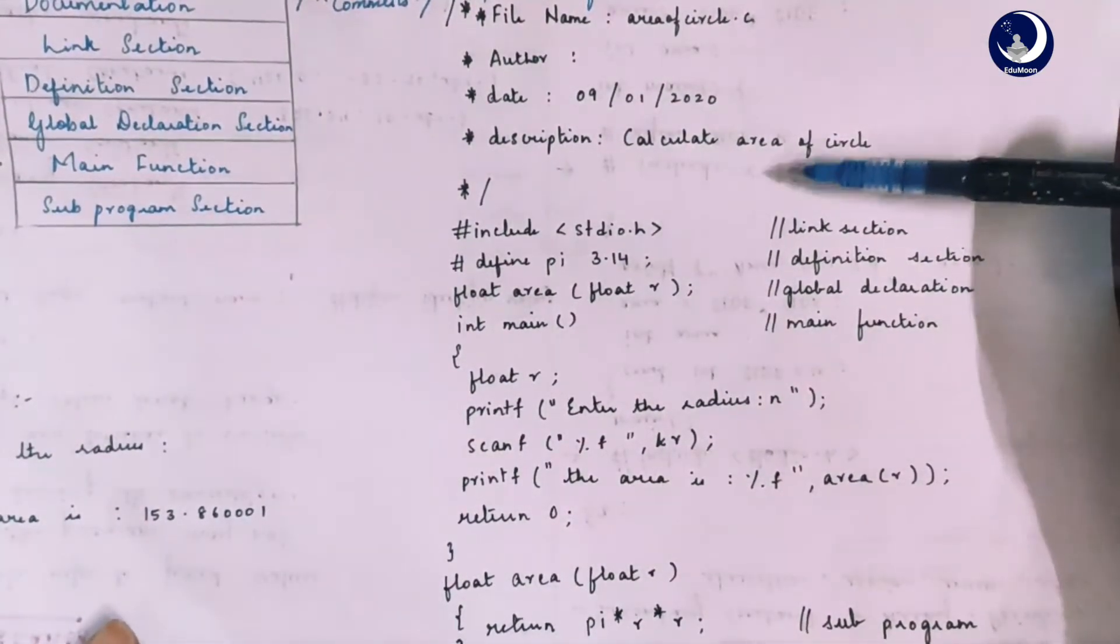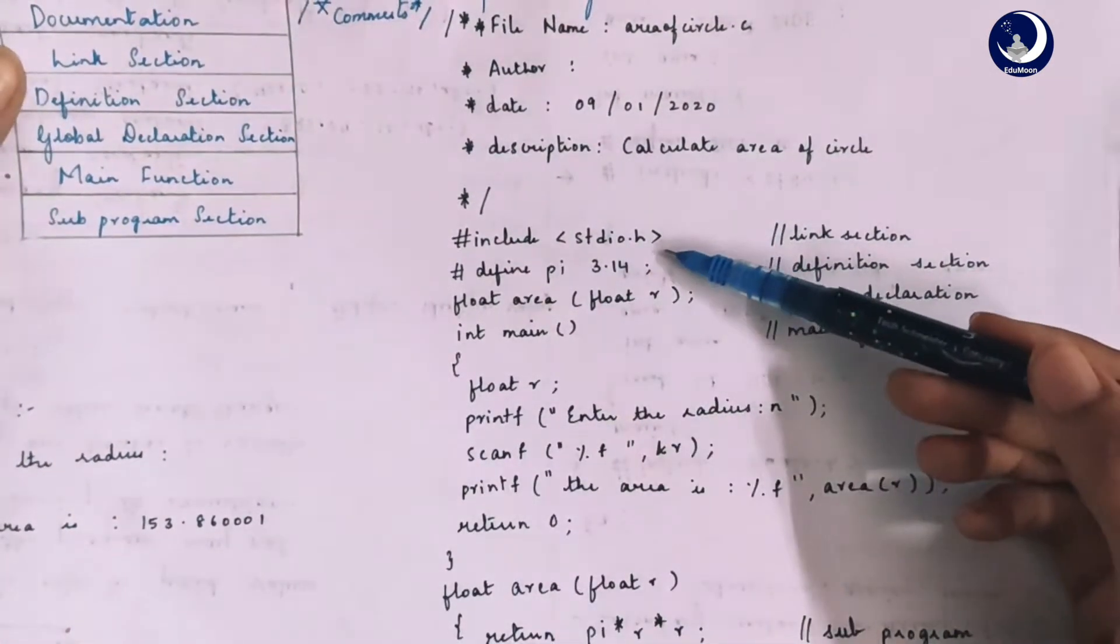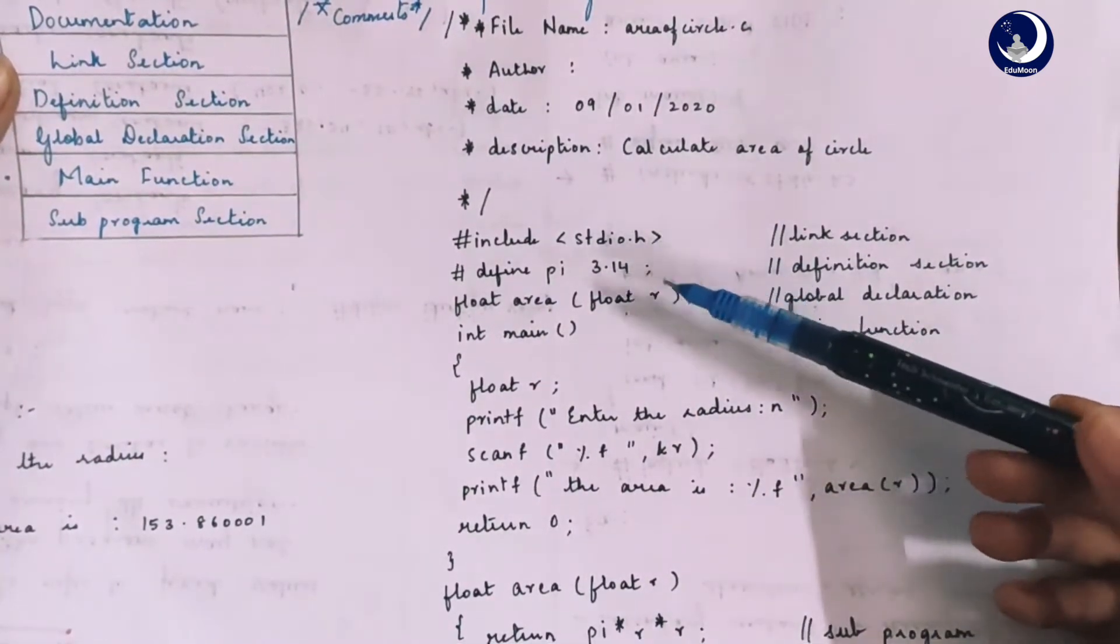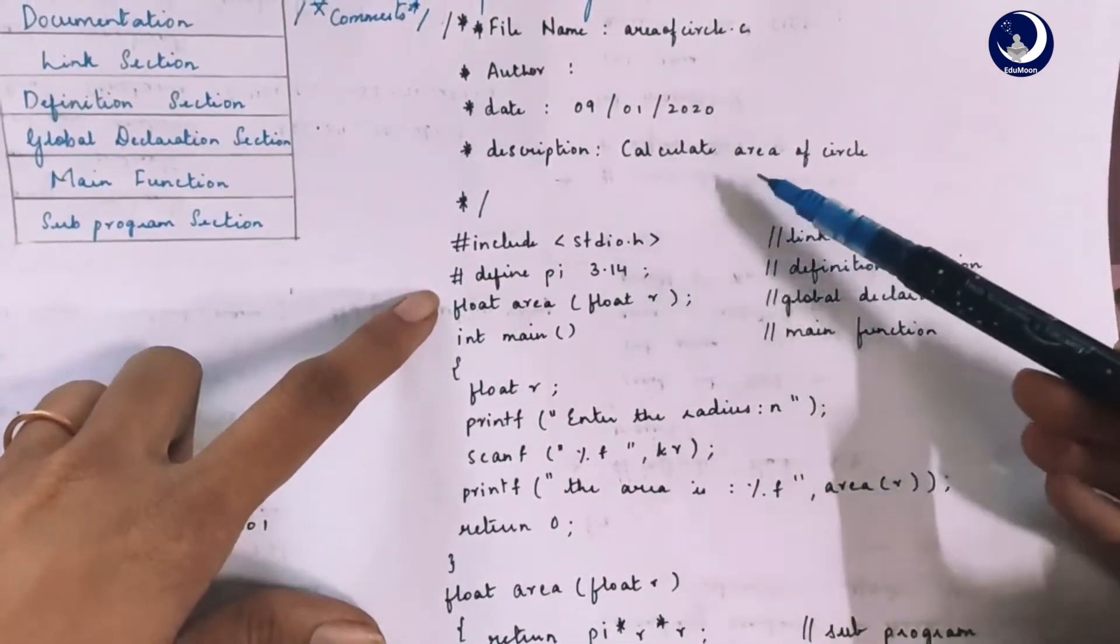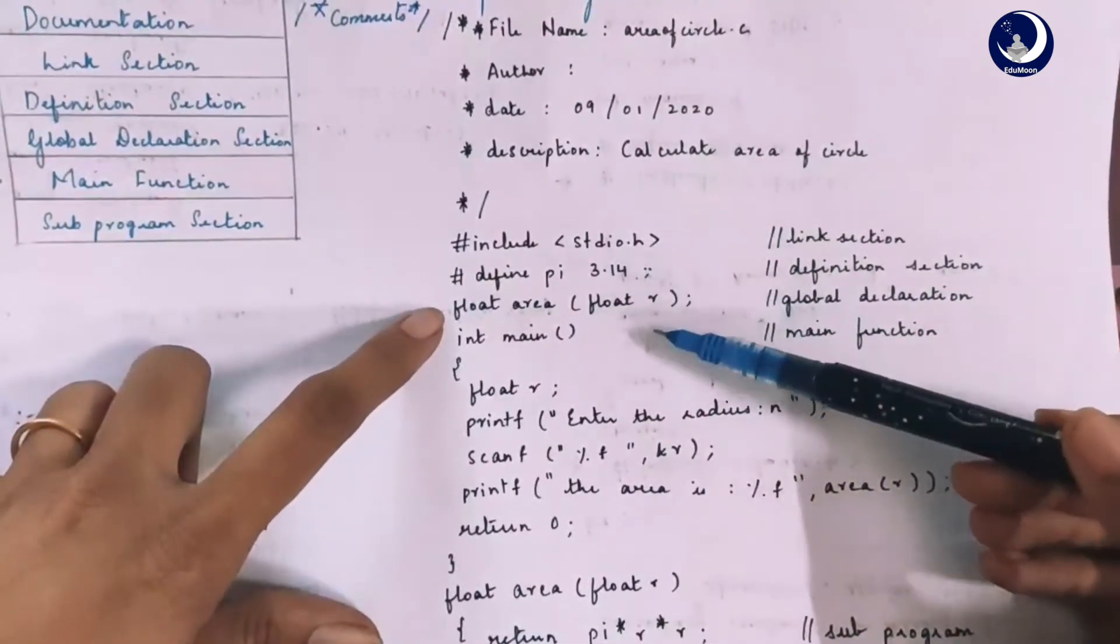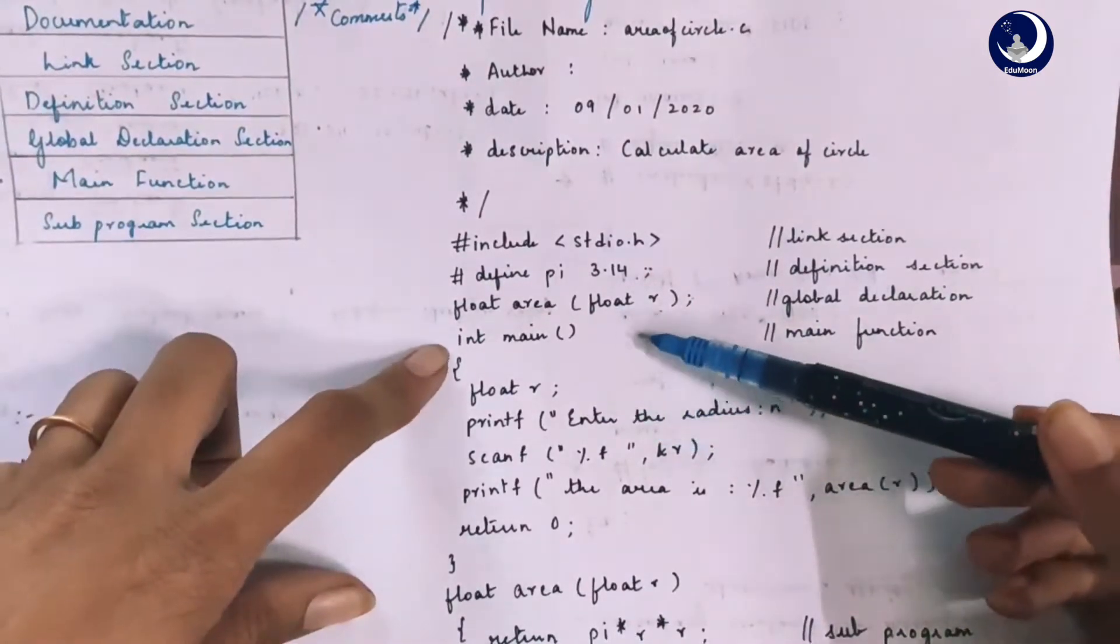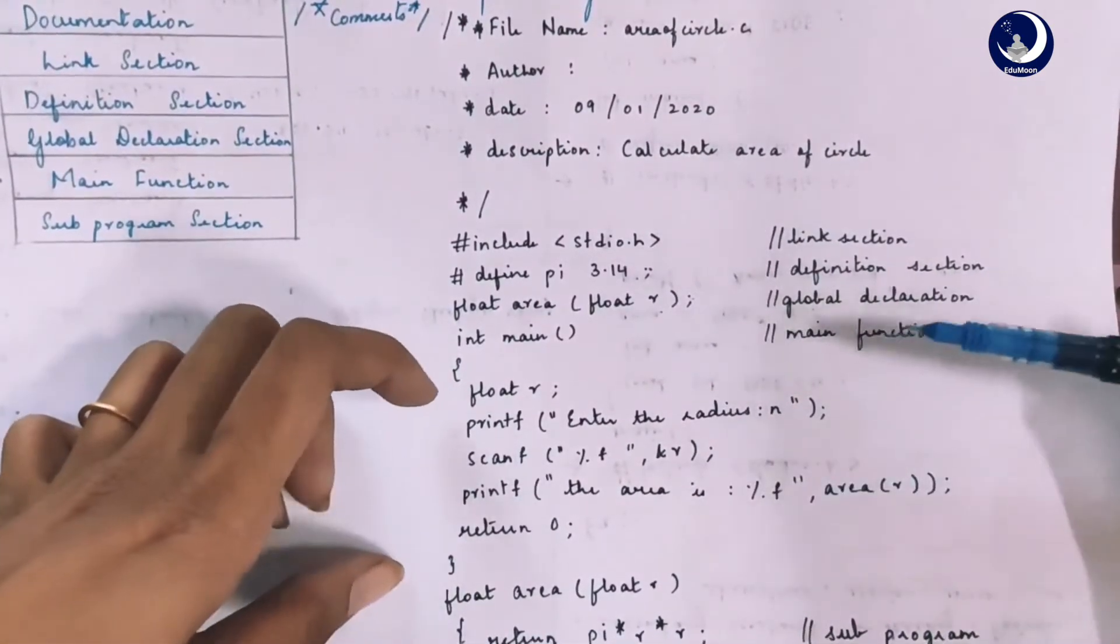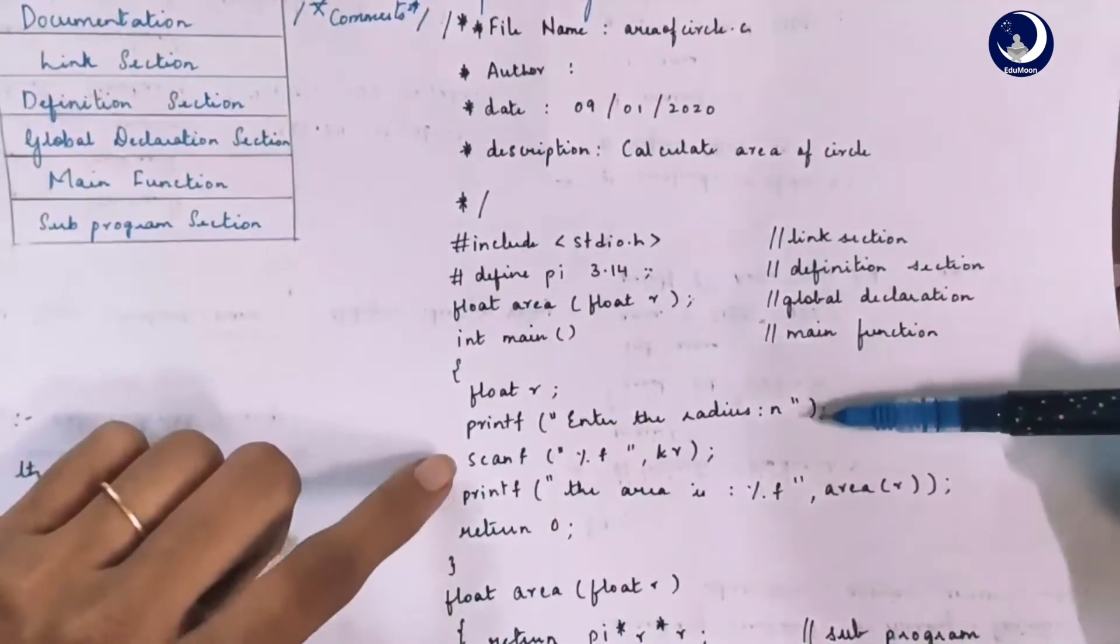The links section is where we have hash include stdio dot h where the header file is used to link. The third section is the definition section which includes the definitions. Here because we used the program to calculate area of a circle we defined pi value. The fourth section is the global declaration section and the fifth section is the main section. The main section actually has the program code with the declaration section and the actual executable section.